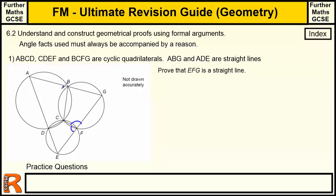If I call this angle X, then the adjacent angle on the straight line is 180 minus X. Using the cyclic quadrilateral rule, the opposite angle must be X because the two opposite angles must add to 180. If that angle is X, then the next angle in the chain is 180 minus X; and applying the cyclic quadrilateral rule again gives X, and then 180 minus X. These two then add to 180, proving it's a straight line.